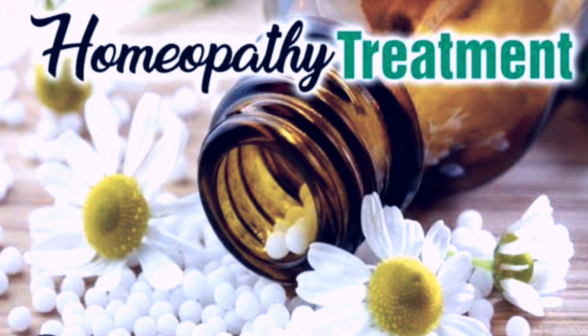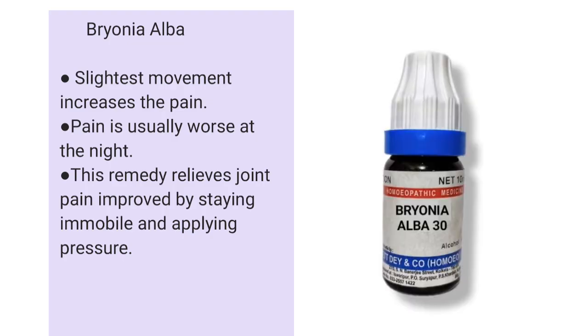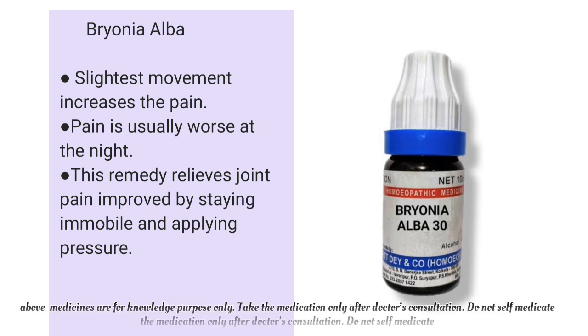As previously mentioned, treatment options in allopathy are limited to non-steroidal analgesics to control pain, and in severe cases, surgical correction. However, homeopathy takes into account the triggering symptoms, the associated symptoms, and the status of the immune system before deciding on a treatment regime. One popular homeopathic medication is Bryonia alba — its peculiar symptom is that the slightest movement increases the pain; pain is usually worse at night and better by applying pressure.